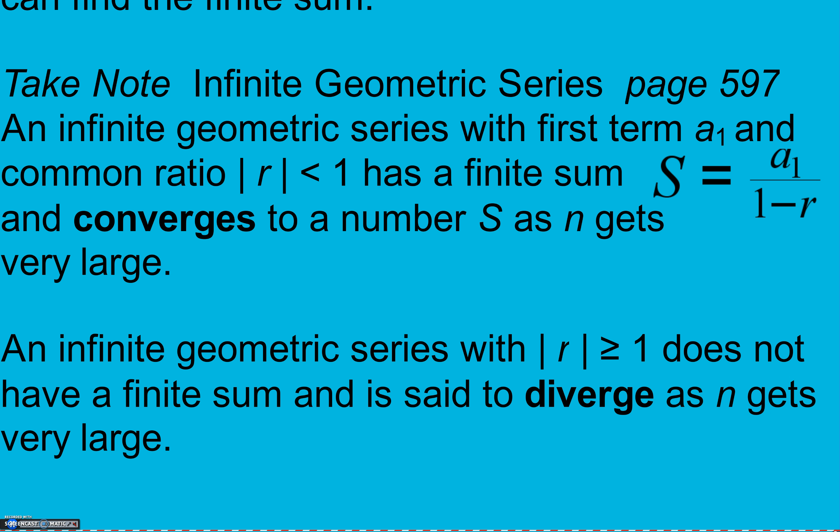So 1 minus 0 is 1 times a sub 1. Again, as we plug in bigger and bigger numbers for n, r to the n approaches 0, which means it gets really close to 0, like 0.000000001 or something like that.